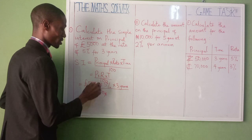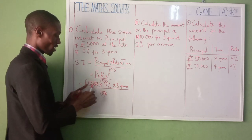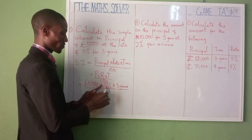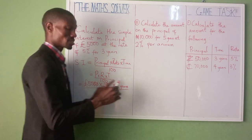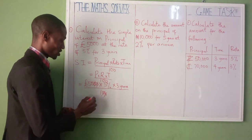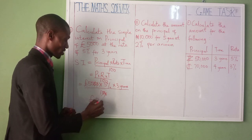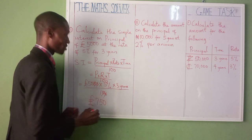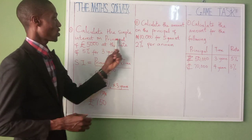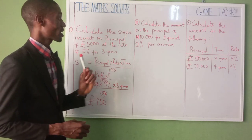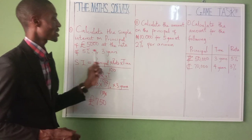So, 0 cancels 0, 0 cancels 0. Now 50 is left. 50 times 5 is 250. Then 250 times 3 is 750. So we have 750 pounds. It's as simple as that — that's the simple interest on the principal of £5,000 at the rate of 5% for 3 years.